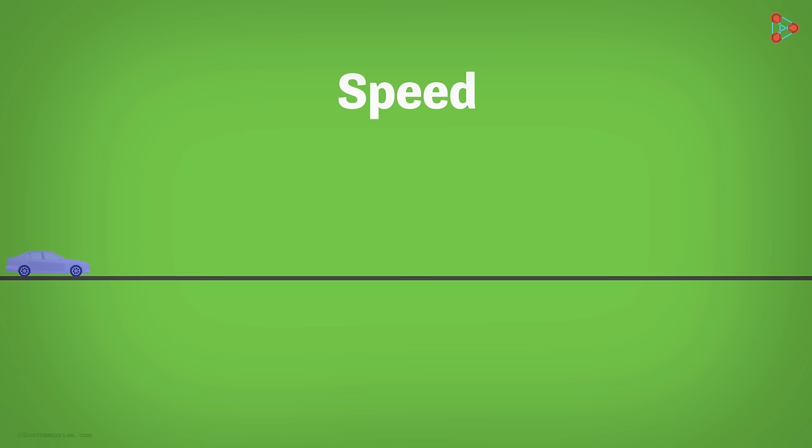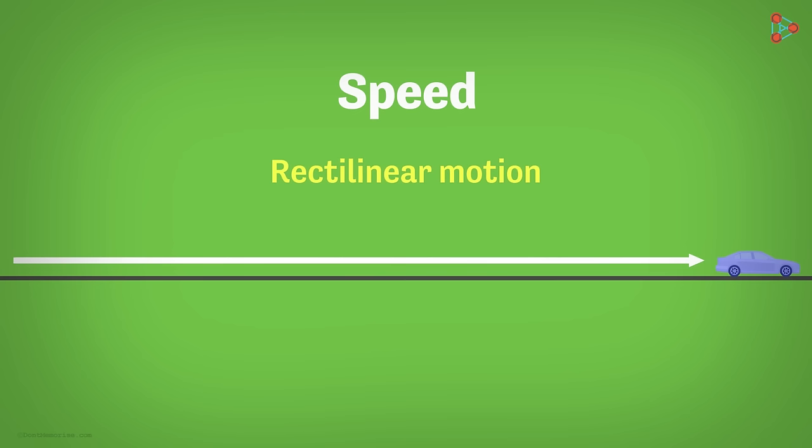Consider a car moving on a straight road. First of all, can you tell the type of motion it is undergoing? Since it is moving in a straight line, it is in a rectilinear motion.